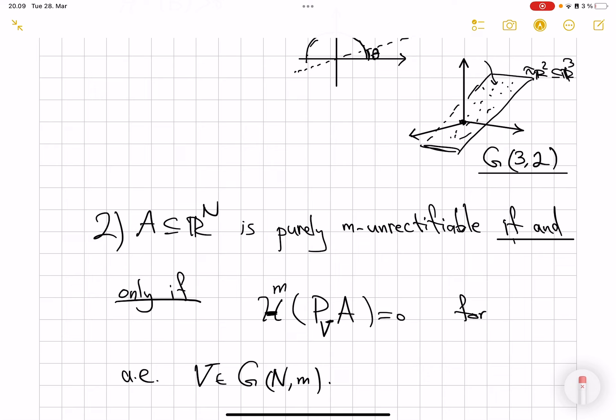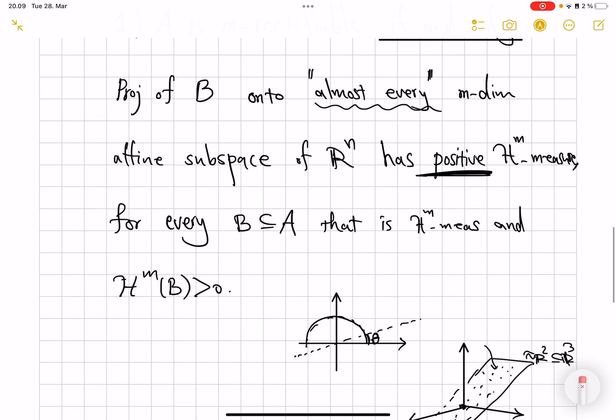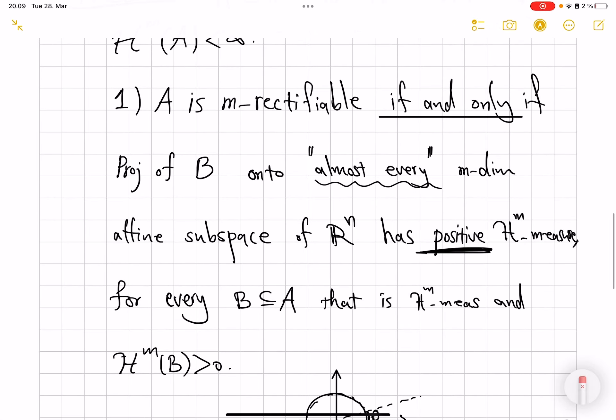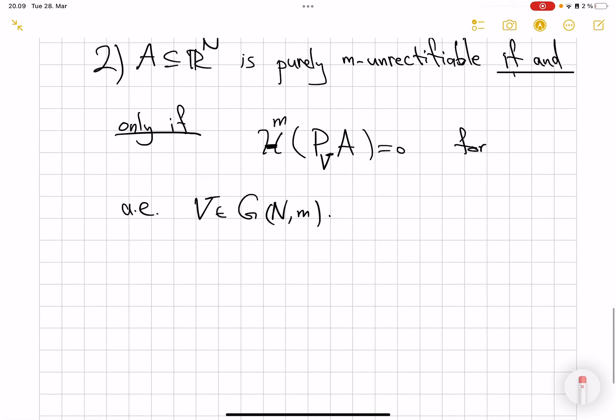So there is no contradiction there if you have a set which is union of a rectifiable part and a purely unrectifiable part. But the beauty of this theorem is that if after we decompose a set into purely unrectifiable and m-rectifiable parts, you can detect this by just asking whether the projections have positive measure or zero measure in almost all directions. So that is one of the most fundamental theorems in geometric measure theory. Again, Besicovitch-Federer projection theorem.